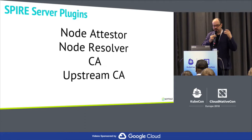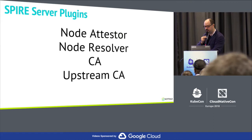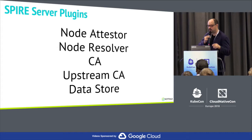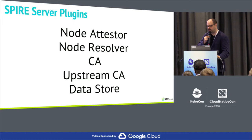The data store is responsible for providing a registry to store all the workload identities and attestation policies — the rule sets used to assign identities to workloads. Currently it's implemented using SQLite, and in the roadmap we're going to have an HA implementation.